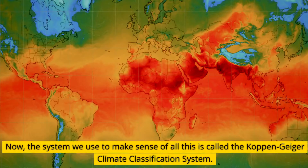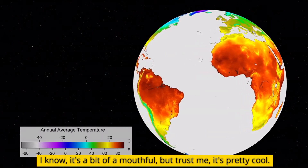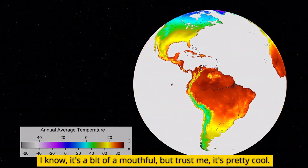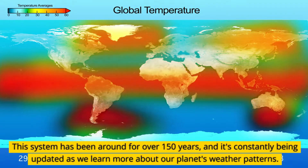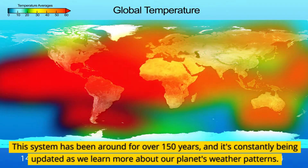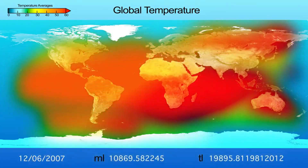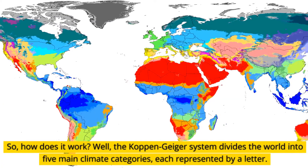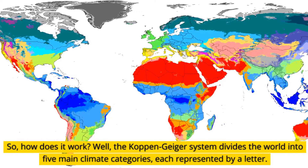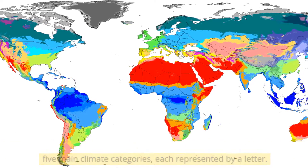The system we use to make sense of all this is called the Köppen-Geiger Climate Classification System. It's a bit of a mouthful, but trust me, it's pretty cool. This system has been around for over 150 years, and it's constantly being updated as we learn more about our planet's weather patterns. The Köppen-Geiger system divides the world into five main climate categories, each represented by a letter.